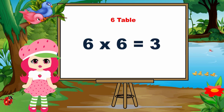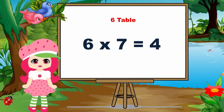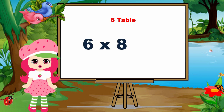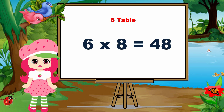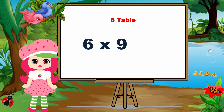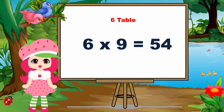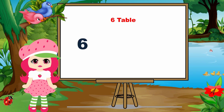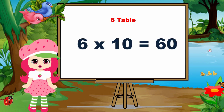Six sixes are thirty-six. Six sevens are forty-two. Six eights are forty-eight. Six nines are fifty-four. Six tens are sixty.